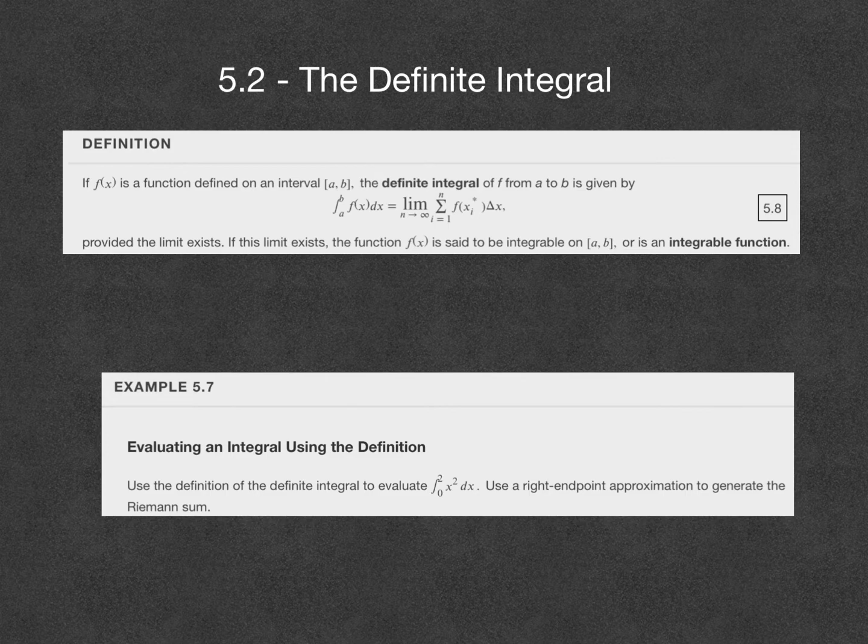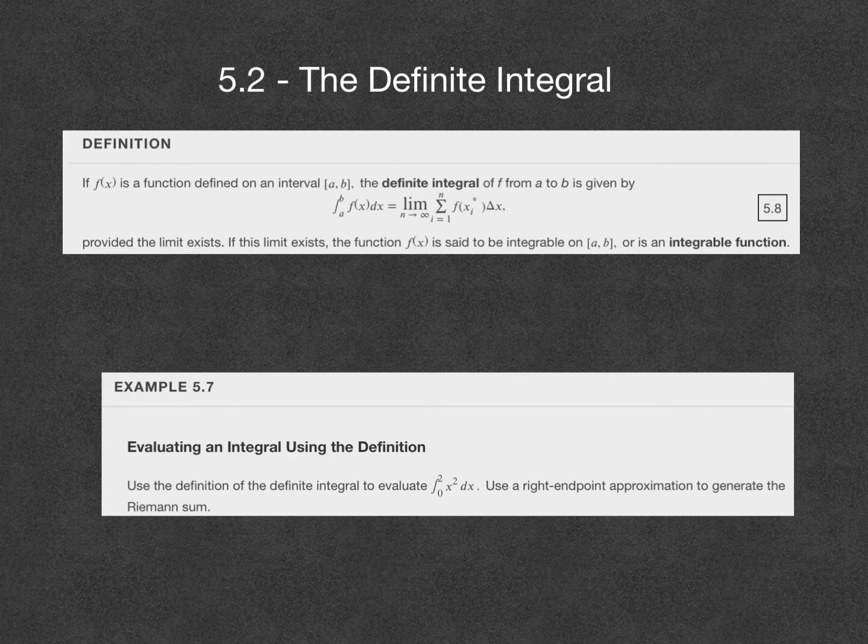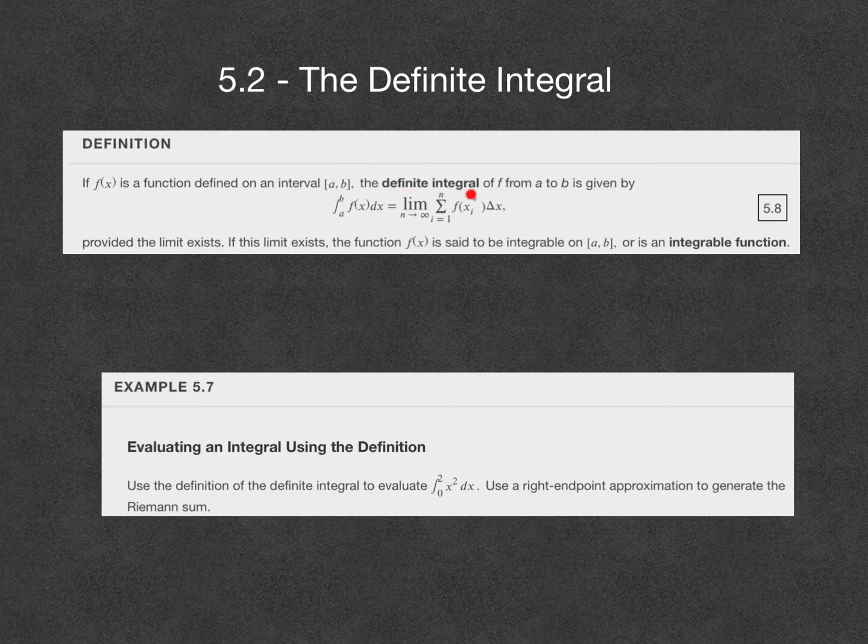So here we connect the notation of the indefinite integral, tweak it a little bit, and connect that to the idea of the area under a curve, condensing that area using Riemann sum notation. We begin with the definition for a definite integral.